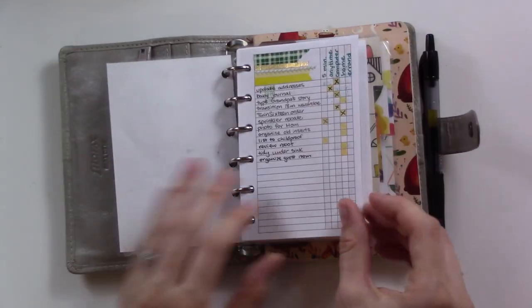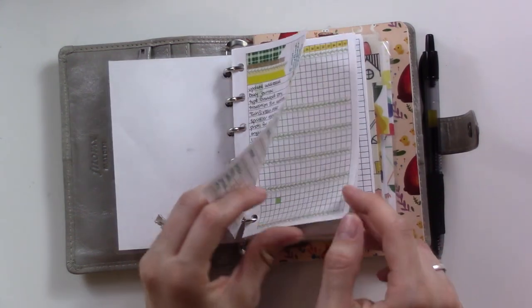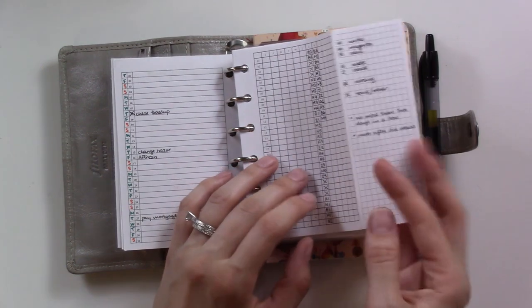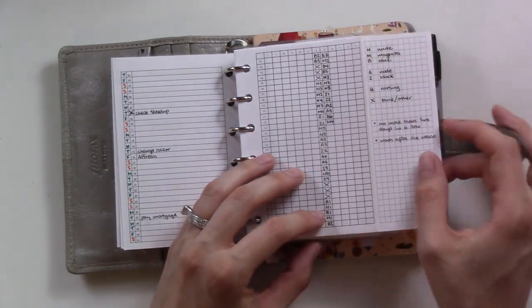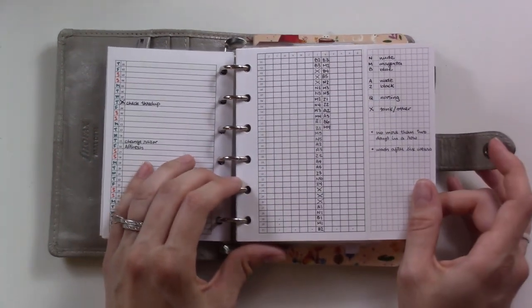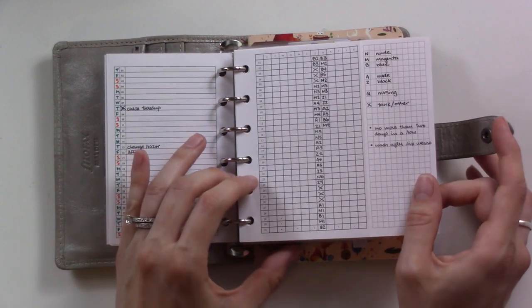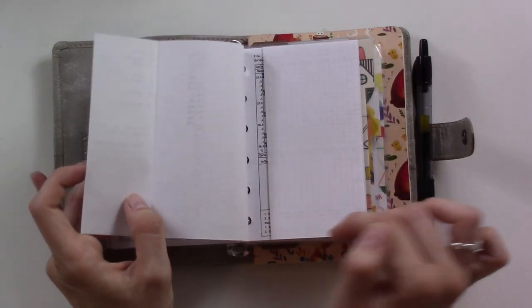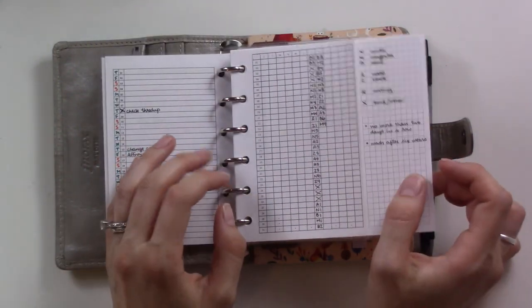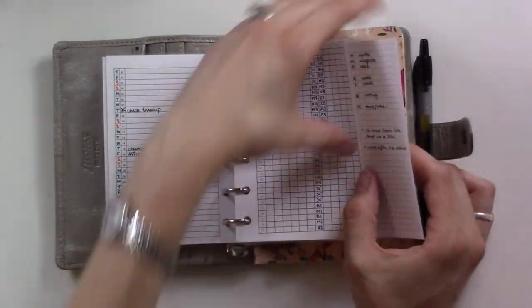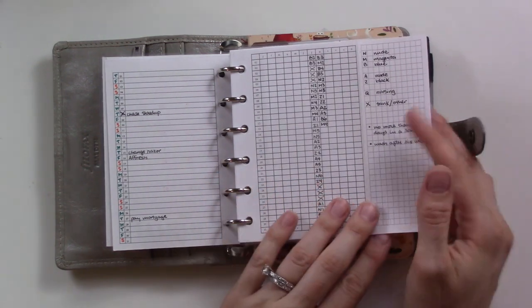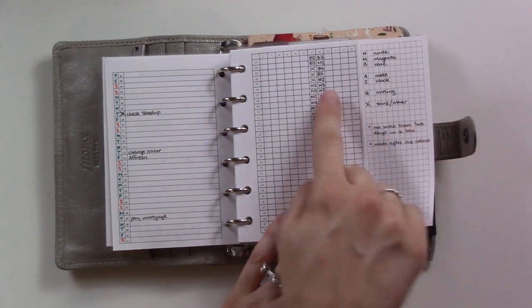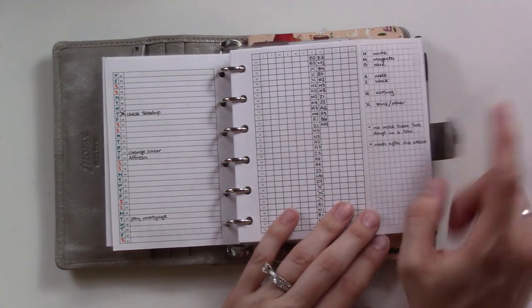This is in the very front section of my planner where I've got my monthly setup. This is actually from the undated annual bundle from Peanuts Planner Co. You see here it's got this little fold-out. The fold-out is where I keep my key, where you know what each letter stands for.